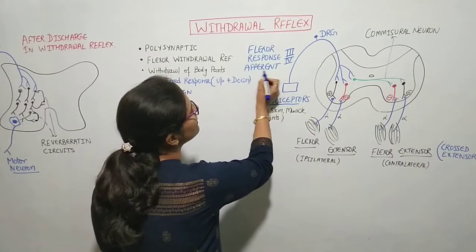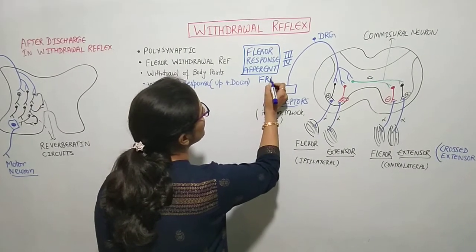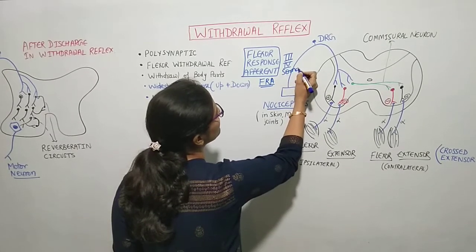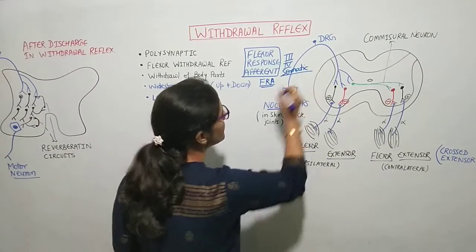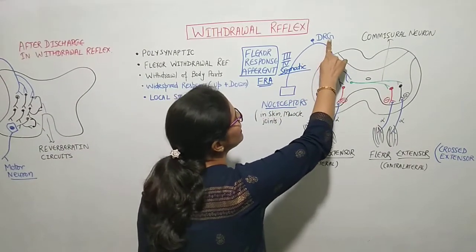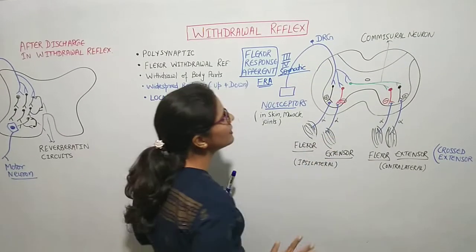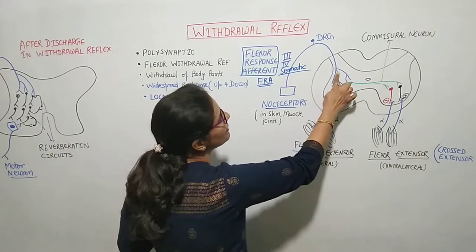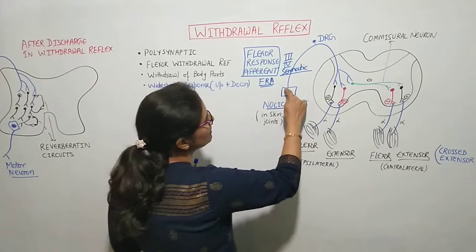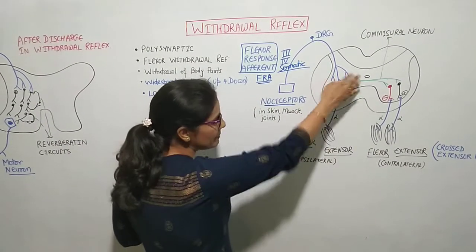The response is a flexor response. Type 3 and type 4 somatic afferent fibers carry the signal. These fibers pass through the dorsal root ganglion and enter the spinal cord through spinal nerves as afferents.